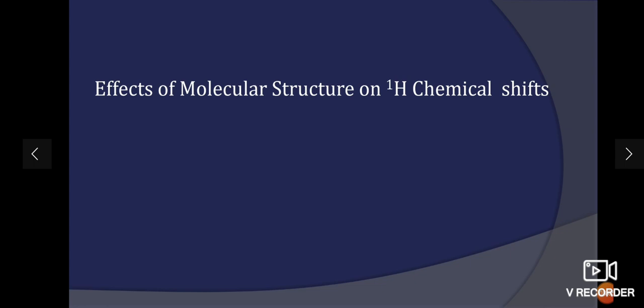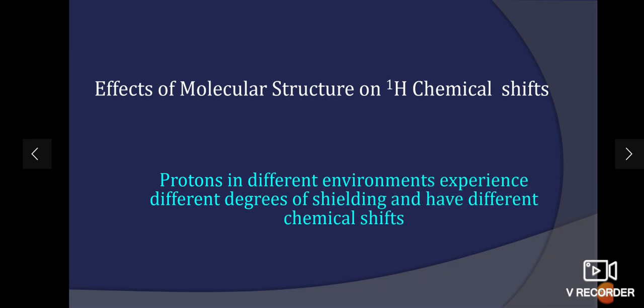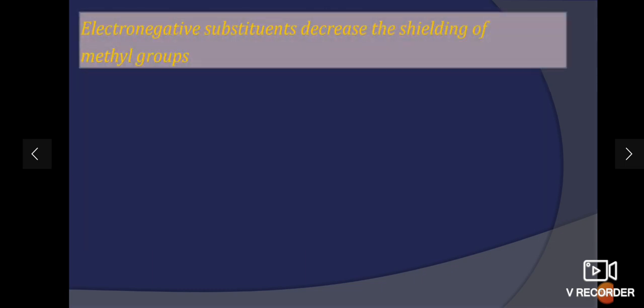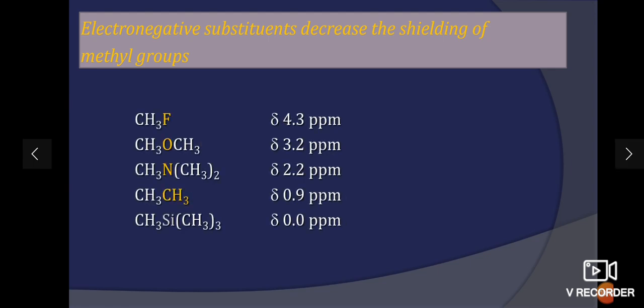The factors affecting the chemical shift I am showing now. The electronegative groups present in the molecule will shift the chemical shift value to higher position. For example, for CH3F, the chemical shift value is 4.3 ppm and for dimethyl ether is 3.2. For other compounds, it is decreasing. The presence of electronegative group decreases the shielding of methyl groups.